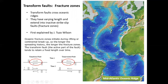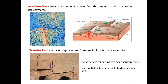Transform faults were first explained by Tuzo Wilson. These type of structures basically initiate drifting or continental breakup, and they can get longer and longer as a result of linkage throughout the spreading history. Transform faults are a special type of strike-slip fault that separates spreading centers at the bottom of the ocean. Transfer faults are different from transform faults because transfer faults are connected to another type of fault on each side — instead of a spreading center.